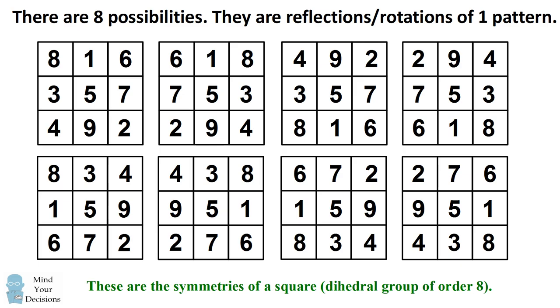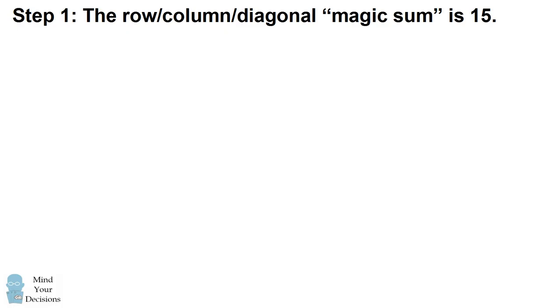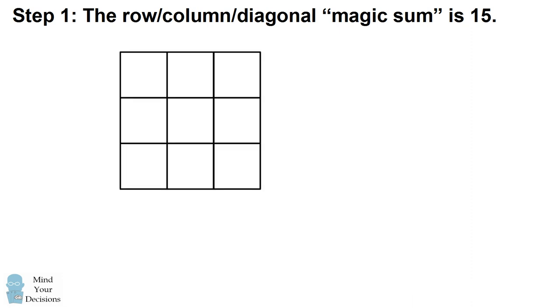So we're going to prove these are the only ways you can have a 3x3 magic square, and we're going to do that in several steps. First we're going to say, we don't actually know a magic square exists, but we're going to come up with some conditions that if a square exists, certain things have to be true. One thing is that every single row, column, and diagonal is going to need to sum to 15. So why is that?